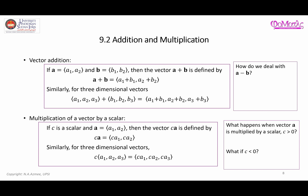In this video I'm going to talk about addition and multiplication of two vectors. If you have a two-dimensional vector A and another two-dimensional vector B, then A plus B can be obtained by adding the components separately: a1 with b1, and a2 with b2, as given by this formula here.